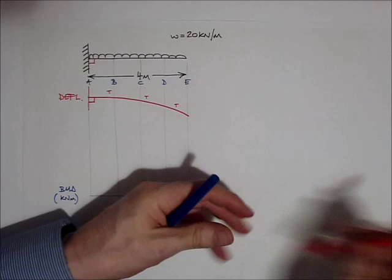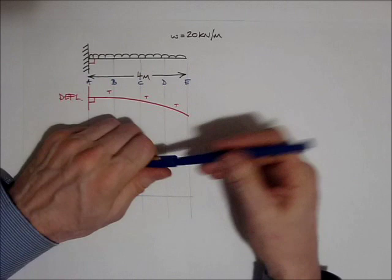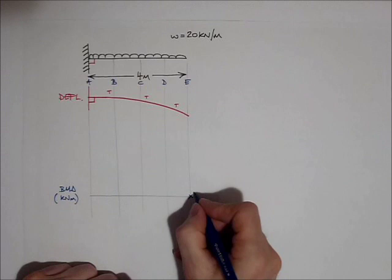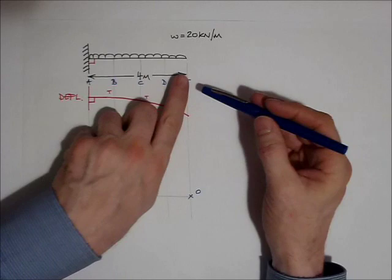The first place I'm going to start is at the tip of the cantilever. At the tip of the cantilever, the bending moment is always zero. That's nice to know, it's almost like a free gift at the start of every bit of work like this.